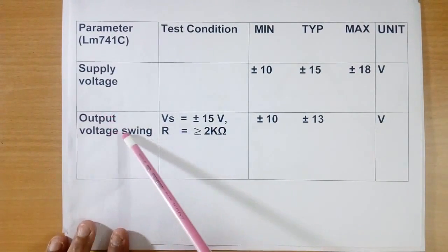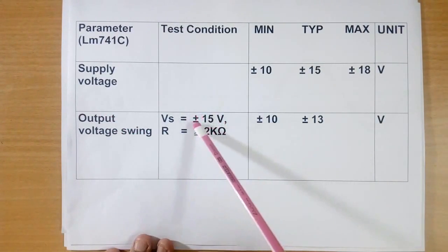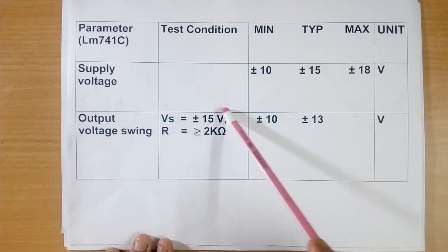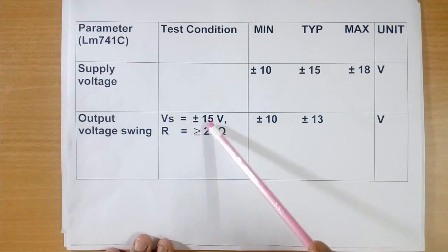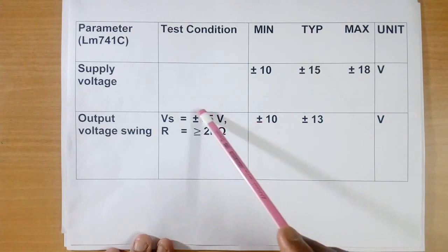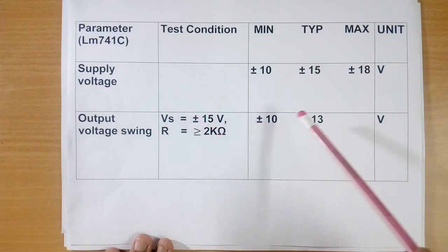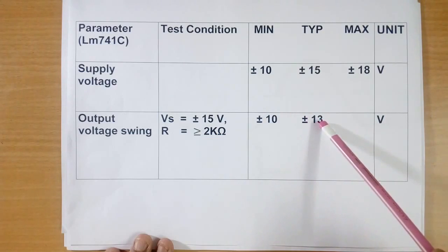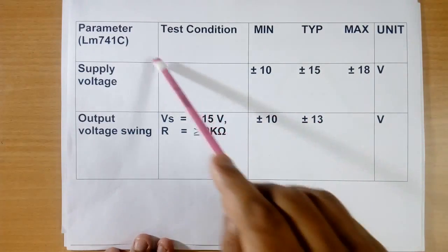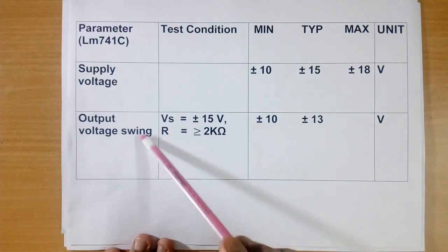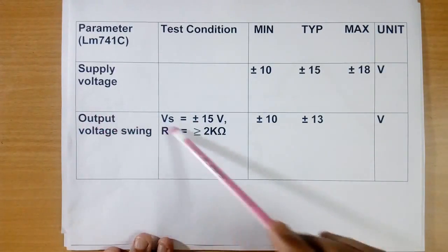Now output voltage swing. Suppose we give plus minus 15 volt to power supply. Then maximum output voltage will not be plus minus 15, it will be less. It will be plus minus 13 volt as shown in the data sheet of 741C. This is called the output voltage swing.